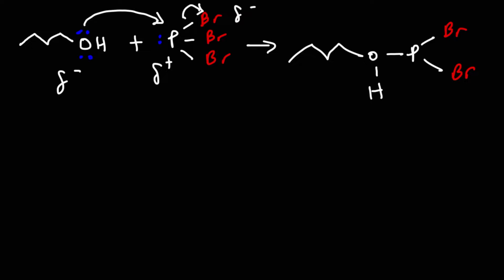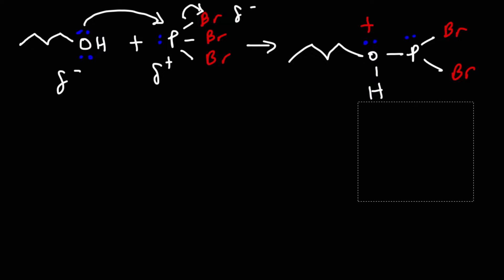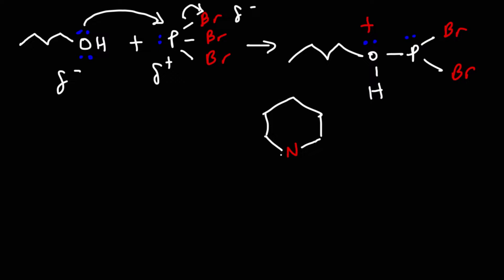When oxygen has three bonds, it carries a positive charge. Protonated alcohols are highly acidic — when oxygen has three bonds with a hydrogen on it, that hydrogen is highly acidic. So an acid-base reaction occurs: we use the solvent pyridine, a weak base, to abstract the proton, putting those two electrons back on the oxygen.